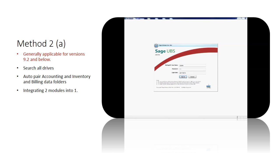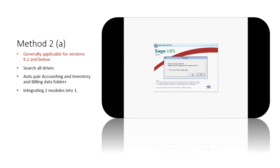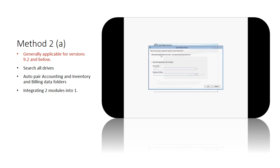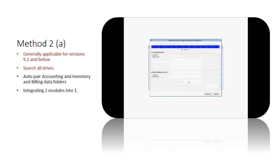If you are currently using version 9.2 or lower versions, you can migrate data into Sage UBS 2015 using this method. Upon login, it will ask if you would like to migrate data from previous versions. Select Yes. You may ask the system to search all drives, or you can specify the location of your previous Sage UBS installation manually. Let's try search all drives. The system checks for the number of drives and folders available. Click Search to begin.